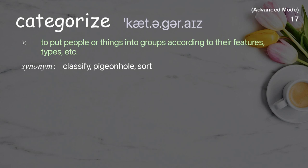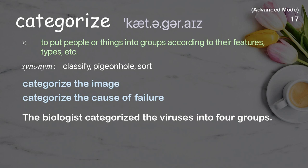Categorize: to put people or things into groups according to their features, types, etc. Examples: categorize the image, categorize the cause of failure. The biologist categorized the viruses into four groups.